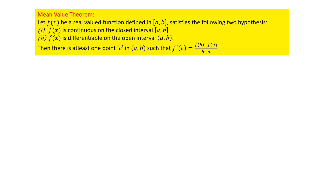Now let us move on to the second theorem: the mean value theorem. For the mean value theorem, the first two conditions are the same as Rolle's theorem — f(x) is continuous on [a, b] and differentiable on (a, b). Instead of the third condition, we have: there exists at least one point c in (a, b) such that f'(c) = [f(b) - f(a)] / (b - a).